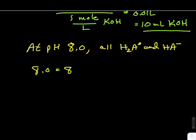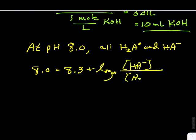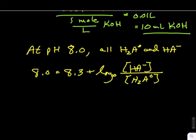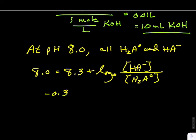Writing the appropriate Henderson-Hasselbalch equation and doing the subtraction, we see that the concentrations of HA minus and H2A zero are in a ratio of 1 half.